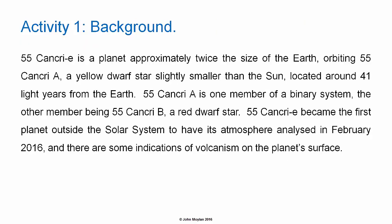The third planet we'll be determining acceleration due to gravity for is 55 Cancri e. It's approximately twice the size of the Earth and orbits the star 55 Cancri A, a yellow dwarf star slightly smaller than the Sun, around about 41 light years from the Earth and one part of a binary star system — the other member being 55 Cancri B, a red dwarf. 55 Cancri e became the first planet outside the solar system to have its atmosphere analyzed in February 2016, and there are some indications of volcanism on the planet's surface. As with the other two planets, it orbits too close for liquid water to form, so none of these planets are candidates for life.